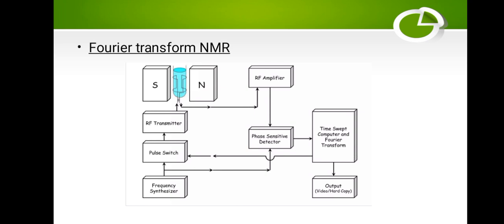In this image of a Fourier transform NMR system, you can see the south and north poles creating the magnetic field, the RF transmitter, the pulse switch, the frequency synthesizer, the RF amplifier, the phase sensitive detector, the time swept computer and Fourier transform, and the output.